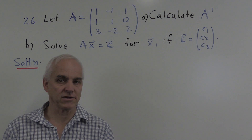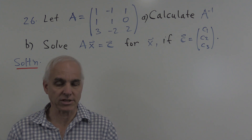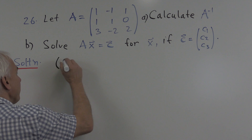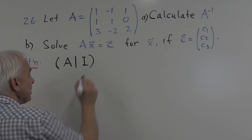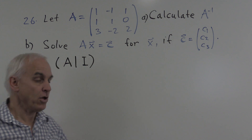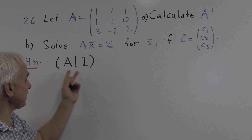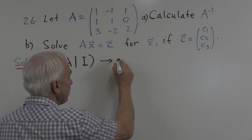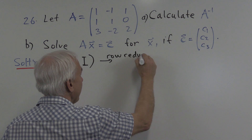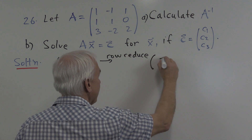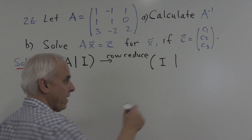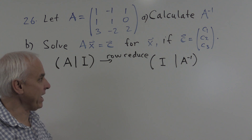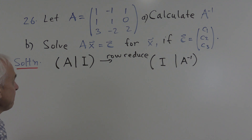There are a couple of different ways of calculating an inverse of a matrix. For the 3 by 3 case, we're going to use a method using row reduction. So we perform the following operation. The idea is we're going to start with a kind of an augmented matrix where we have the given matrix A as part of an augmented matrix and the identity matrix on the right-hand side. Then we're going to row reduce till we get the identity matrix on the left-hand side, and what we have on the right-hand side will be the inverse matrix. That's how we're going to find the inverse matrix.